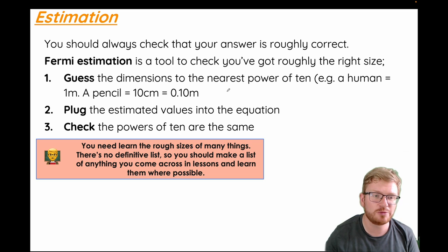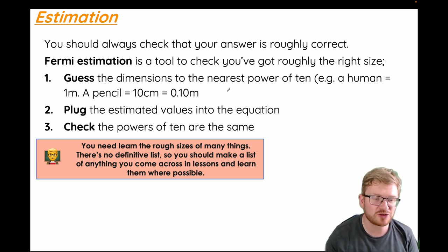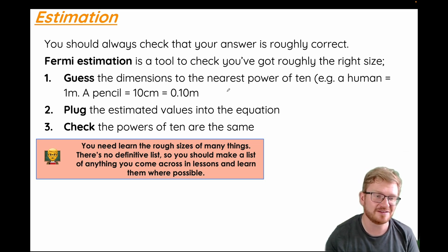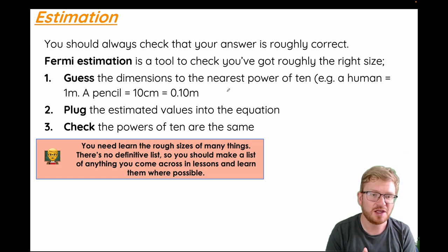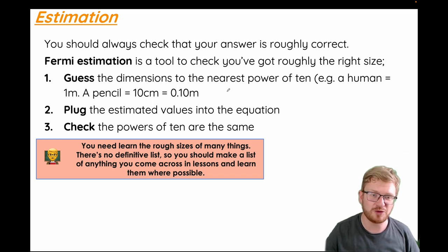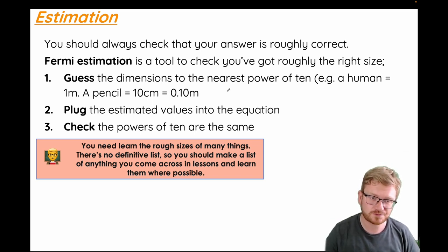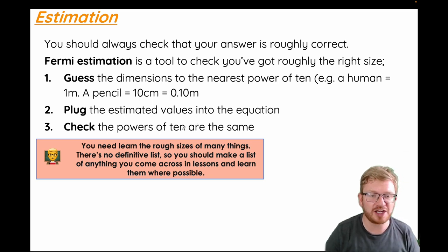So a human would be one metre — a human is not going to be ten centimetres, and not going to be ten metres. Get to the nearest whole power of ten. A pencil is not going to be one centimetre — that would be useless — and a metre-long pencil would also be useless, so we would say ten centimetres for a pencil. You then plug the estimated values into the equation and check that the powers of ten are the same.